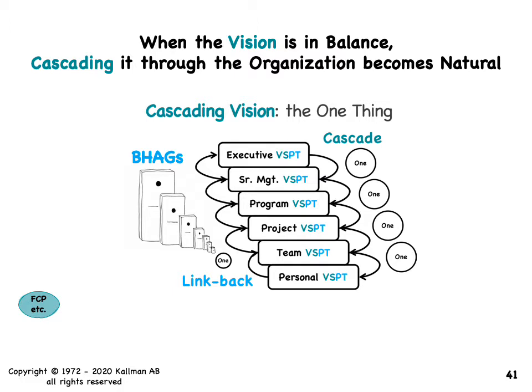Do we have a vision and strategy for the project? Do we have the right people? And are they doing the right things? Then the team — same thing: do we have a VSPT for the team? And then individually, their personal vision and personal strategy, their why for being there — all of this needs to align going back up the food chain.